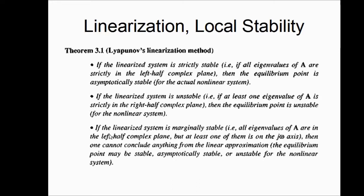If the linearized system is marginally stable — that is, all eigenvalues of A are in the left half complex plane but at least one of them is on the jω axis — then one cannot conclude anything from the linear approximation. The equilibrium point may be stable, asymptotically stable, or unstable for the non-linear system.